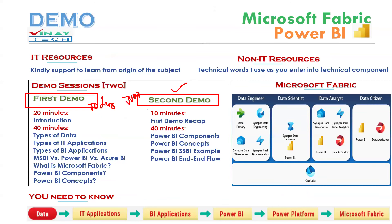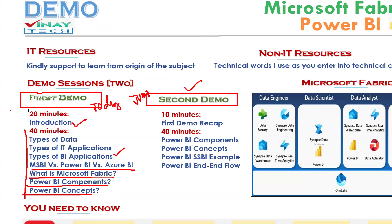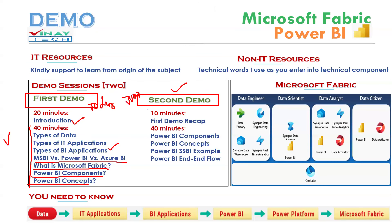The first 20 minutes is an introduction. The next 40 minutes I will explain a very important part: types of data, types of IT applications, types of VA, MSBA versus Power BI versus Azure VA, Microsoft Fabric, Power BI components, and Power BI concepts. This one-hour content is very important — you will learn content you will not get from online portals or many trainers. This is not just a practical part; you cannot get it everywhere.